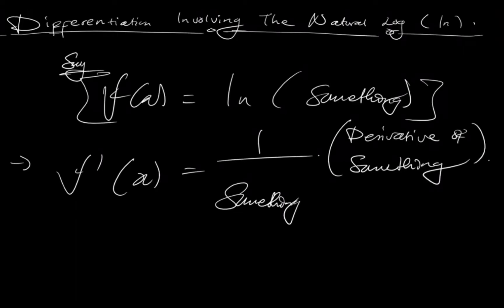The derivative of a function such as f(x) = ln(something) is simply 1 over something, times the derivative of something. Remember: ln(something) — its derivative is 1 over something times the derivative of something. It's a very, very important way to remember it. Like I even told you in a different video: somebody says hi, just say ln(something) equals 1 over something times the derivative of something. I guess you get the point. Let's move on with examples so you can quickly understand what we're trying to look at.